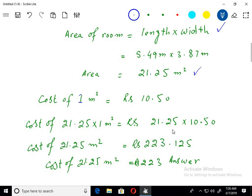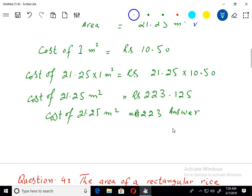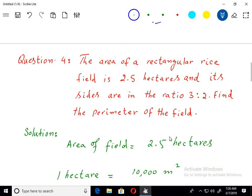Using the calculator I get the answer of rupees 223.125. We can eliminate this decimal and the final answer is 223 rupees. That's it. Next question.